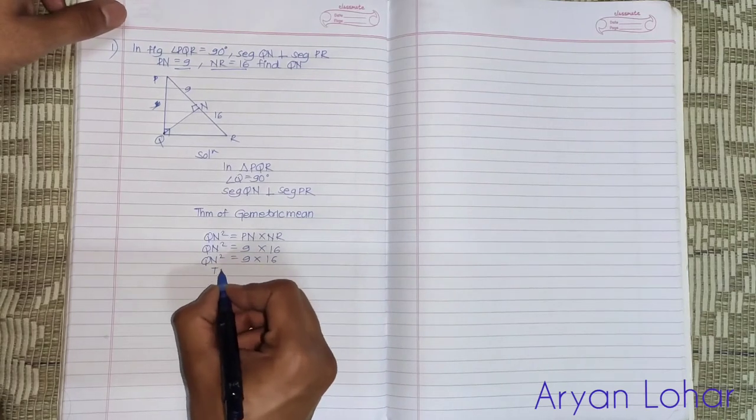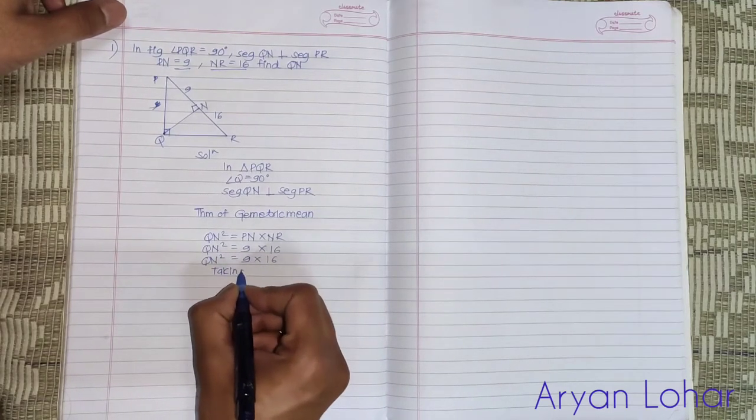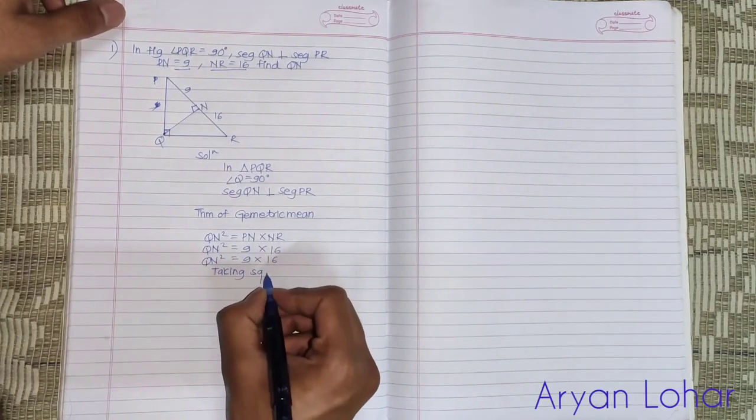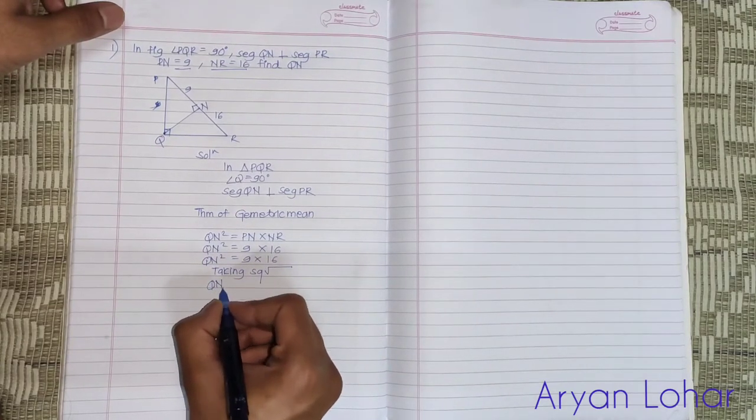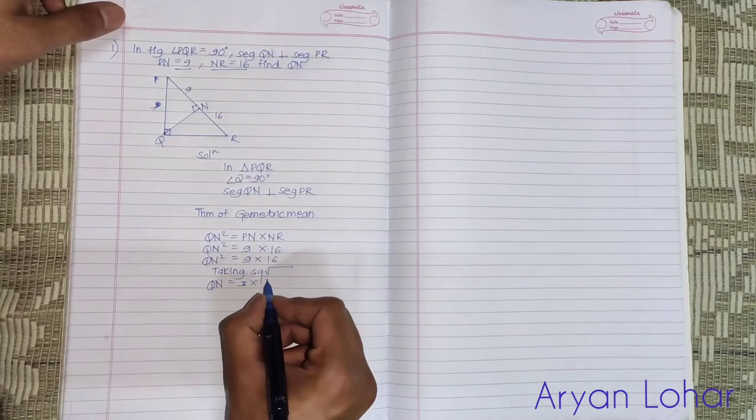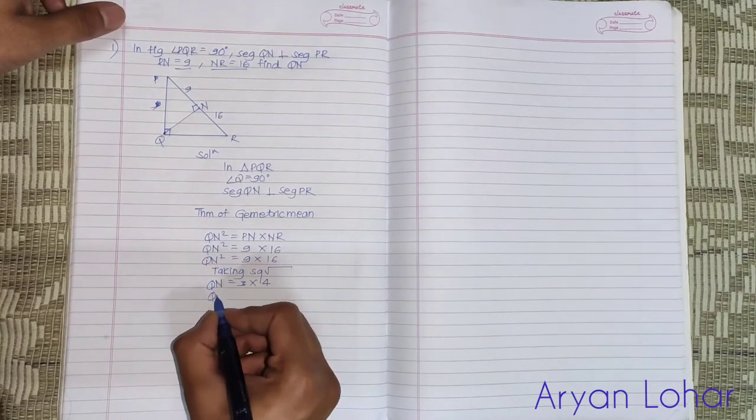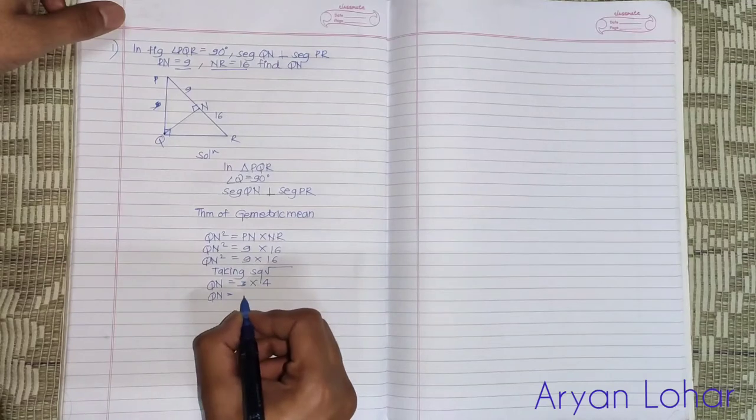Taking square root: square root of 9 is 3 and square root of 16 is 4, so 3 times 4 is 12. Therefore, QN is equals to 12.